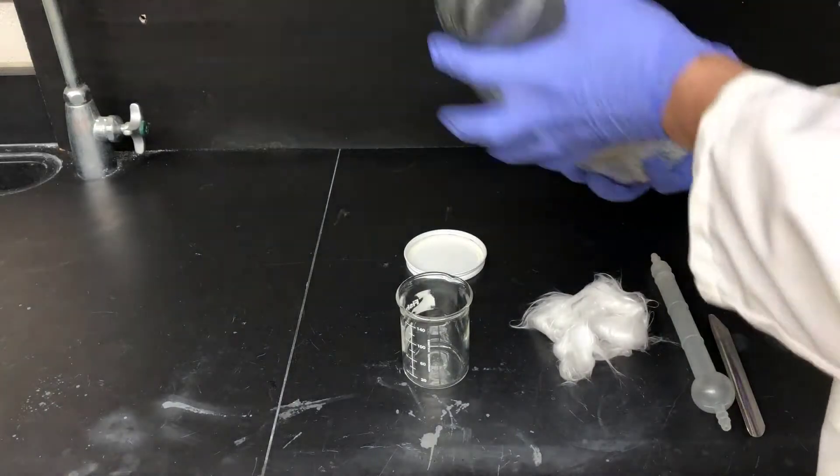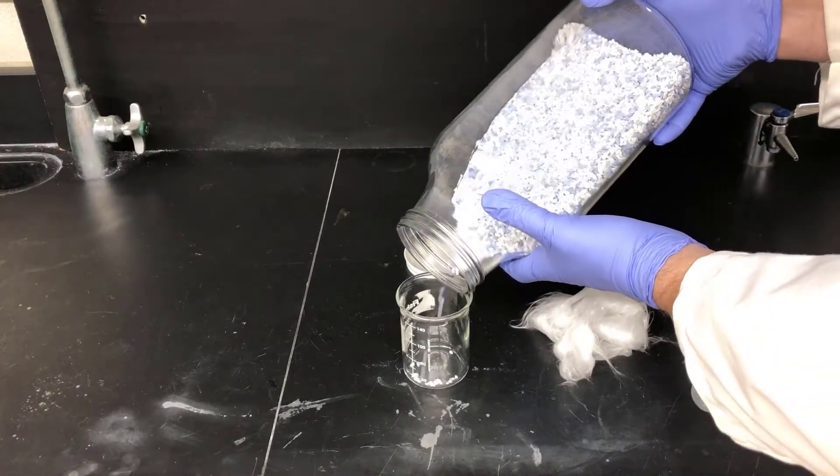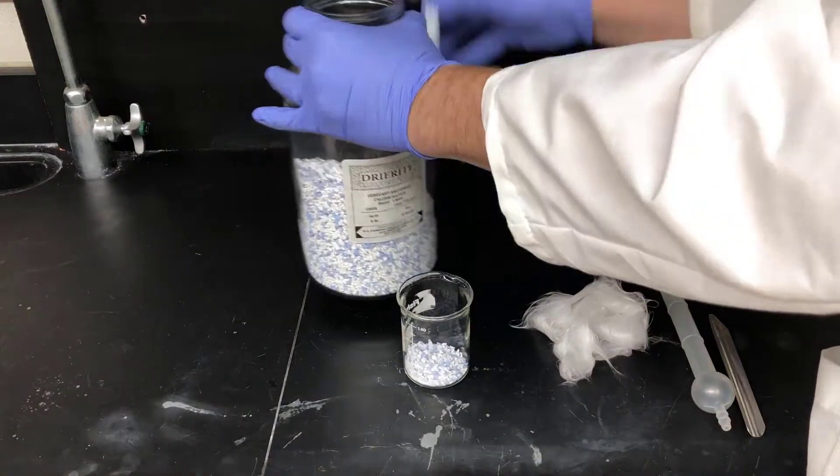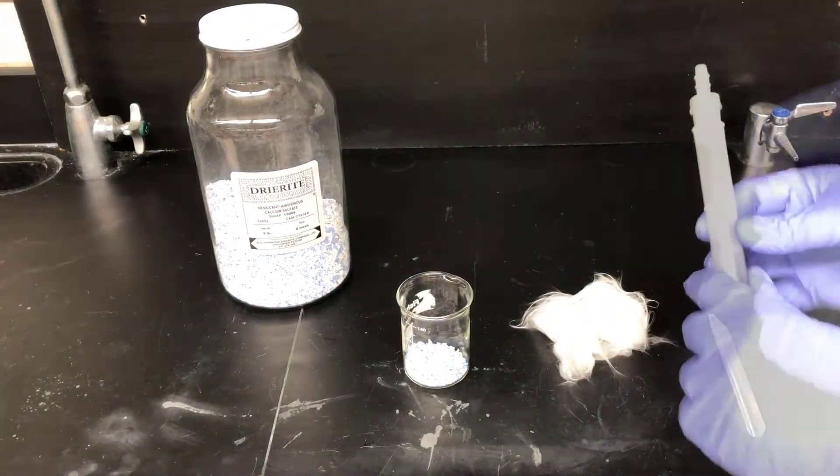Calcium sulfate is a white solid, but some of it has an indicator in it that's blue when it's good and can absorb moisture, and red when it's depleted and can't absorb more moisture, and then it's purple when it's somewhere in between. I've poured some of that dry-rite into a beaker to make it easier to load into the drying tube.